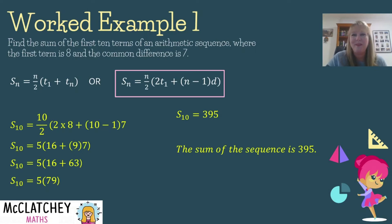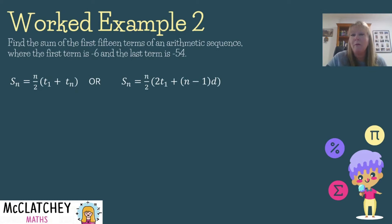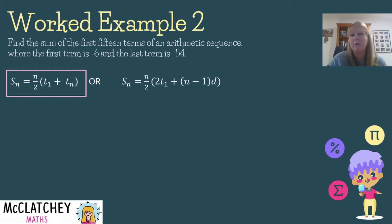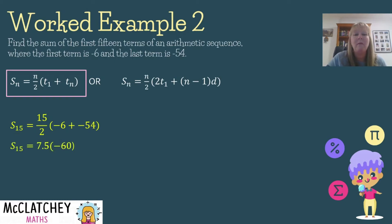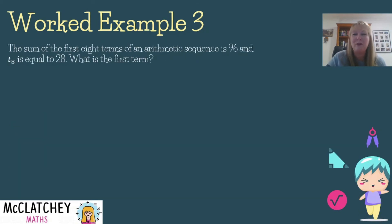Worked Example 2: Find the sum of the first 15 terms of an arithmetic sequence where the first term is −6 and the last term is −54. Since we know the first and last terms, we use the first formula. Substituting n = 15, t1 = −6, t_n = −54: (15/2) × (−6 + (−54)) = 7.5 × (−60) = −450. The sum of the sequence is −450.